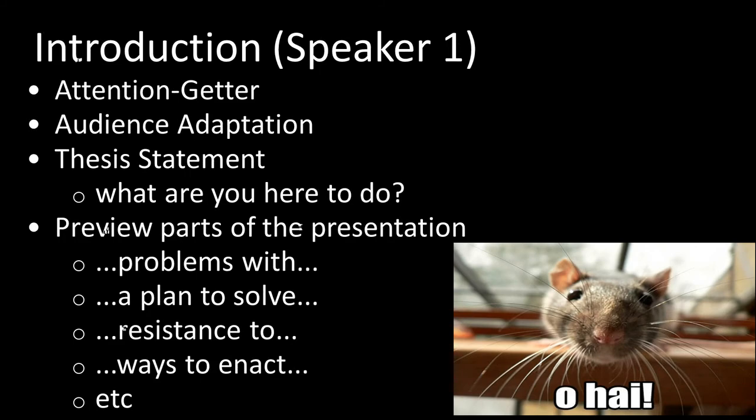I have tentatively broken down this theoretical presentation into a five-speaker model, though you can adapt these main points to any size group. The introduction is very similar to what you did last time: start with an attention-getter, have some audience adaptation, and a thesis statement. This time the thesis should be something along the lines of 'today we're here to persuade you to do X.' Then preview the main points — which are already chosen for you: the problems with the issue, a plan to solve it, resistance to the plan, and ways to enact the change.